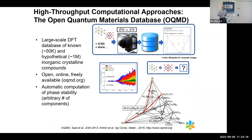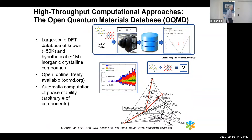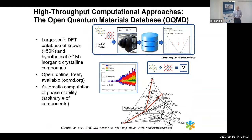Over the last decade of computational screening projects, we've generated on the order of about one million different hypothetical inorganic crystalline compounds — mostly decorations of well-known crystal structure types. For example, you can decorate a rock salt crystal structure with any combination of any two elements from the periodic table. These are currently in the OQMD — about a million compounds — relatively well explored, open, online, and freely available. That's been our guiding mission from day one; the very first word in the title was 'open.'